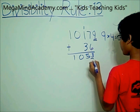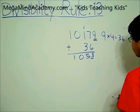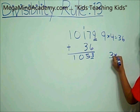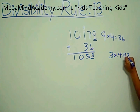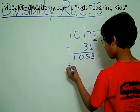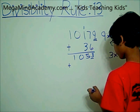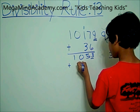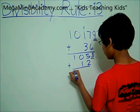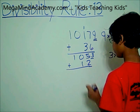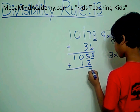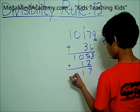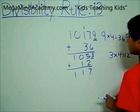Now 3 became the last digit. So you take 3 and multiply it by 4, which equals 12. And you add 12 to 105, so it becomes 105 plus 12, which equals 117.